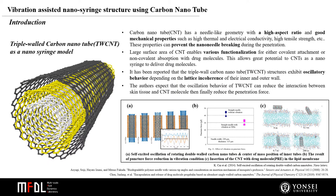Another research utilized electroporation to improve penetration. The approach efficiently decreases the puncture force when penetrating the needle, but it severely damages skin tissue. So we applied triple-walled carbon nanotubes as a nanosyringe model. Carbon nanotube has a needle-like geometry with a high aspect ratio and good mechanical properties, such as high thermal and electrical conductivity, high tensile strength, etc. These properties can prevent the nanoneedle breaking during the penetration.